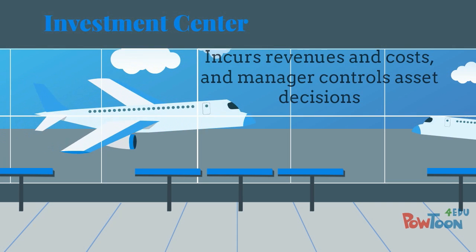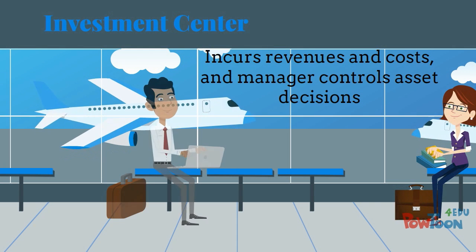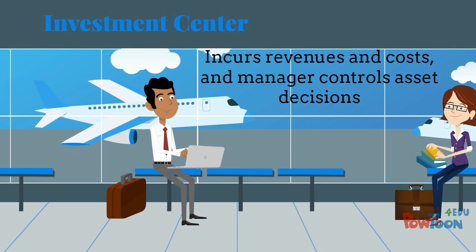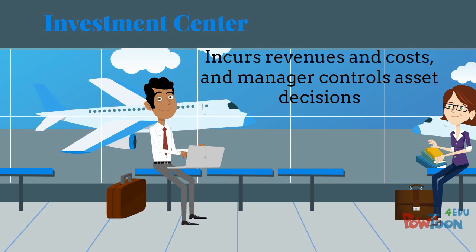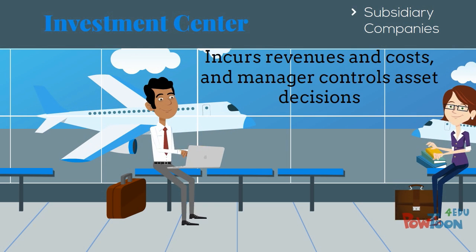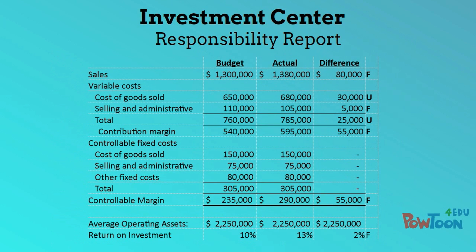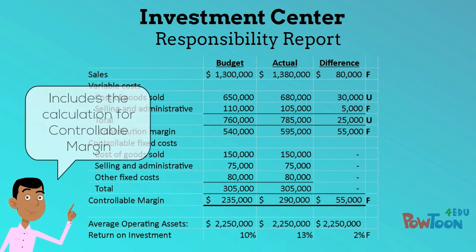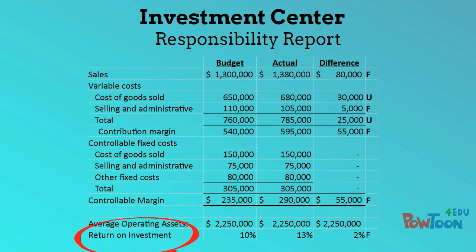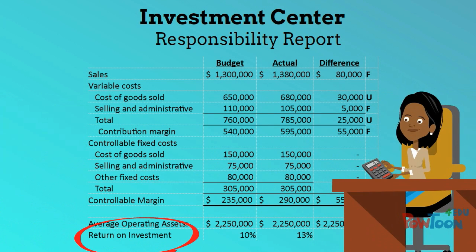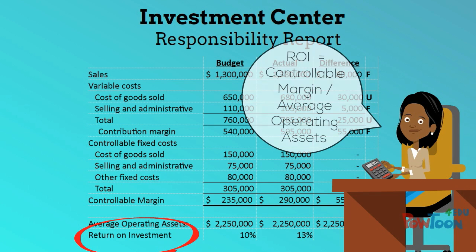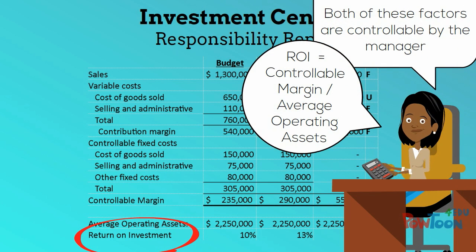An investment center is created when the division incurs both revenues and costs, and also the manager has the ability to control asset-related decisions. These are typically subsidiary companies or large business segments. The responsibility report for an investment center also calculates controllable margin, but also includes an additional calculation: return on investment. ROI is calculated by dividing controllable margin by the average operating asset.